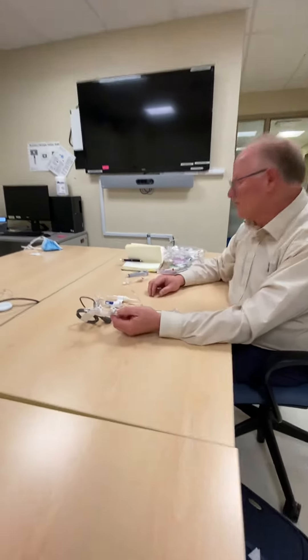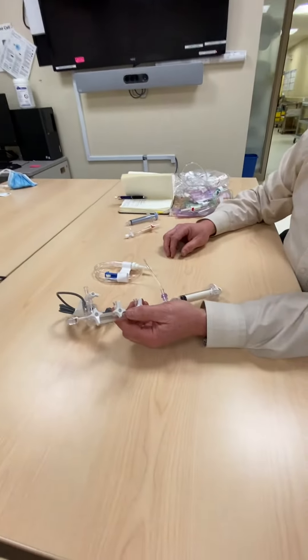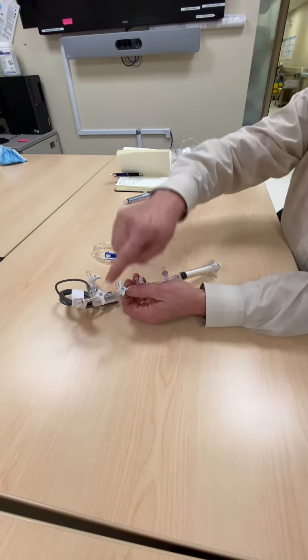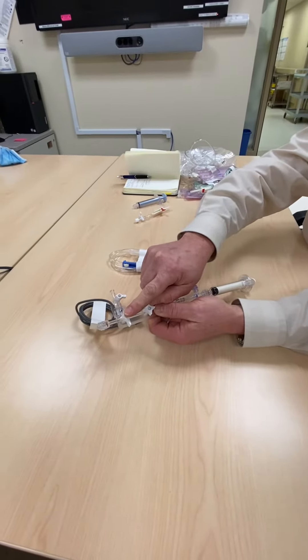Okay, so this is essentially your 360i, and what's different about this is that this is a four-way stopcock instead of a three-way.